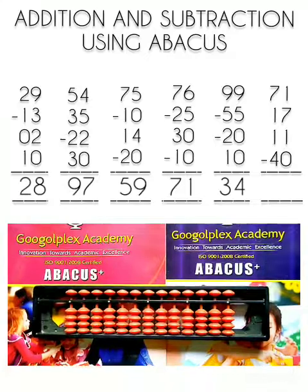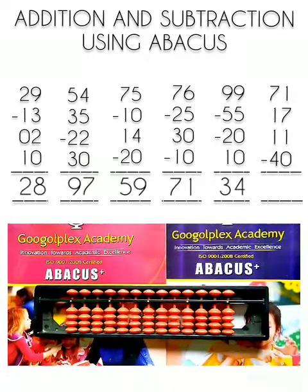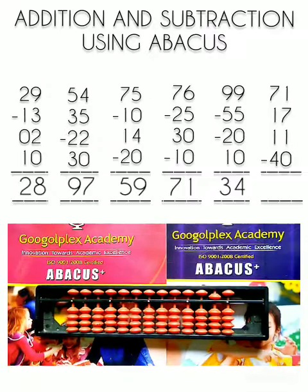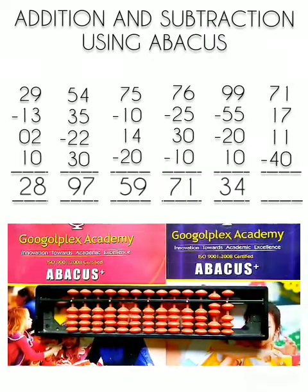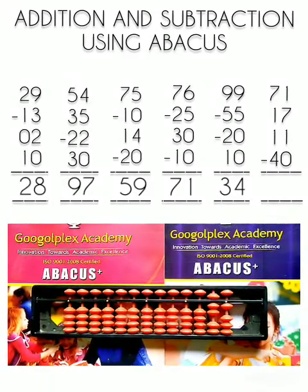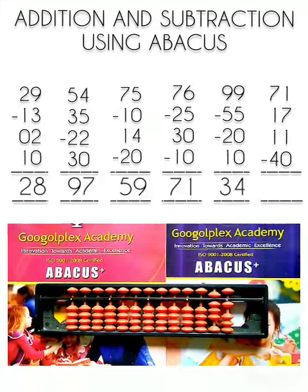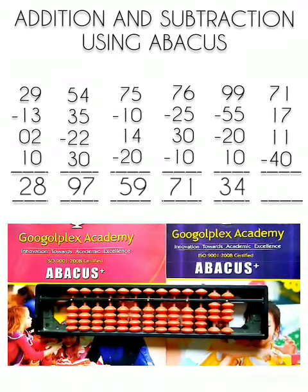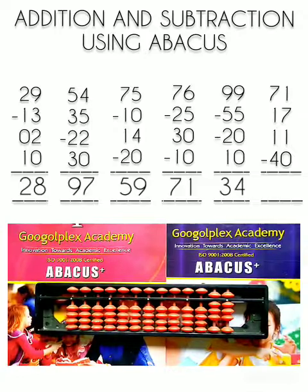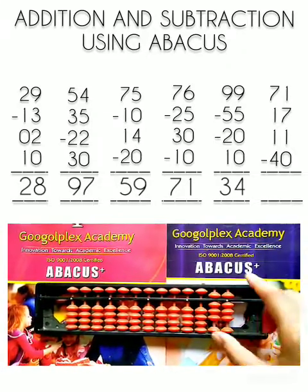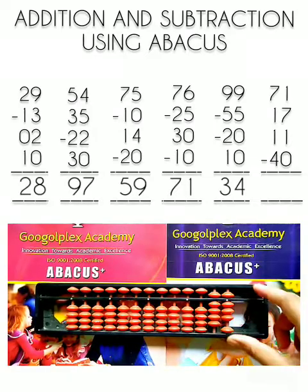Now question number 6. First number is 71. 50 plus 20, 70 and this is 1. Now we have to add 17 to this number. 10, 5 plus 2, this is 7. Now the addition of 17 is done. Now we have to add 11 to this number. 10, this is 11.